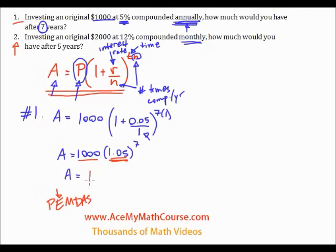And we get the final amount of one thousand four hundred and seven dollars and ten cents. So after seven years investing at five percent compounded annually, a thousand dollars becomes one thousand four hundred and seven dollars and ten cents.